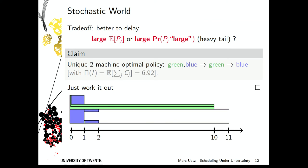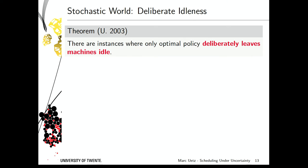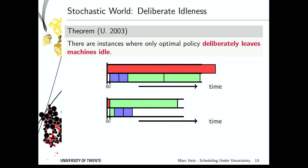You can drive this further: if you introduce weights, you can construct instances where any optimal policy must deliberately leave a machine idle. For example, we have a very important red job that is either blocking the machine forever or vanishes after a tiny time ε. Because it's so expensive you must do it first, and if you wait until time ε you learn whether you have one or two machines available for the remaining jobs. Depending on that, you might want to prioritize different sets of jobs, so the only optimal thing is to leave a machine idle briefly to gain information.